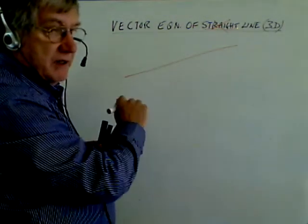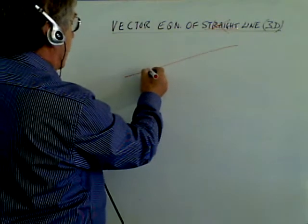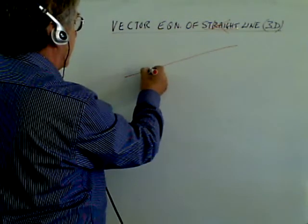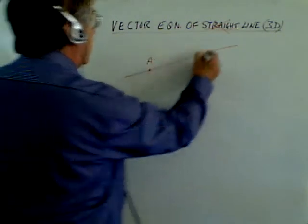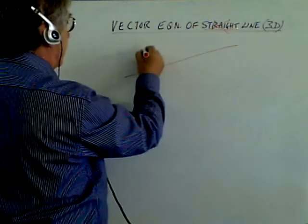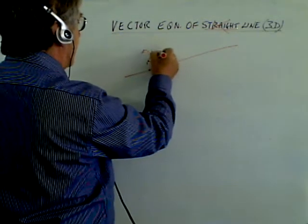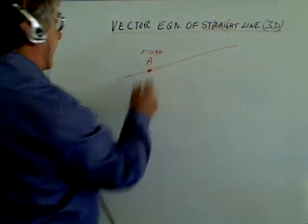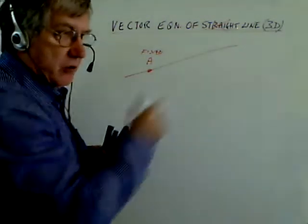So here's a line and we have a point on the line and that's a fixed point. So that's fixed in space, it's got certain coordinates.